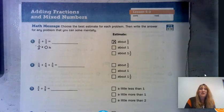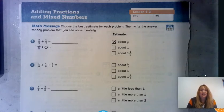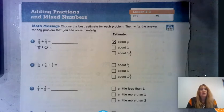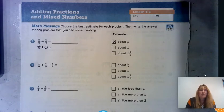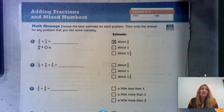Hi and welcome back. We're on EDM 5.3 and today we're going to talk about adding fractions and mixed numbers. To get started, we're going to work with Math Journal page 160. At the top of the page there is a math message and it says to choose the best estimate for each problem, then write the answer for any problem that you can solve mentally.